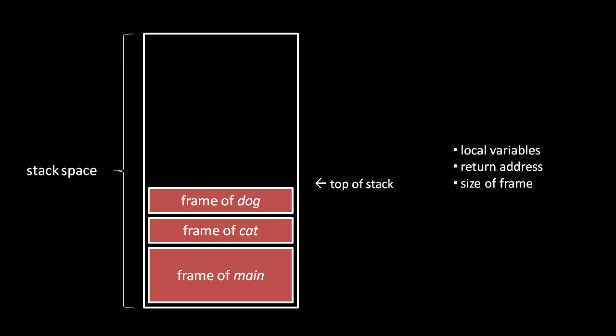When a function returns, the frame size is used to adjust the stack pointer back down to the last frame, and execution jumps back to the return address. So when dog returns, execution returns to cat, and the stack pointer will point to the top of cat's frame. Notice that we don't have to actually delete any frames, because the space a frame occupies will simply get overwritten by subsequent frames as needed.